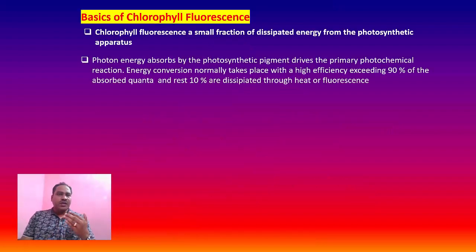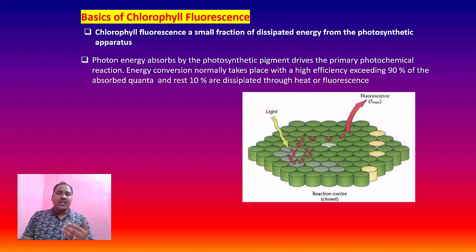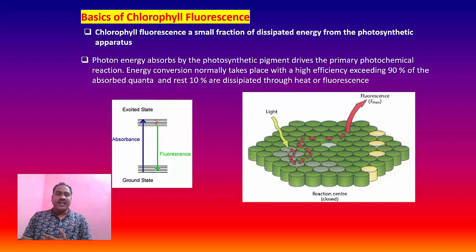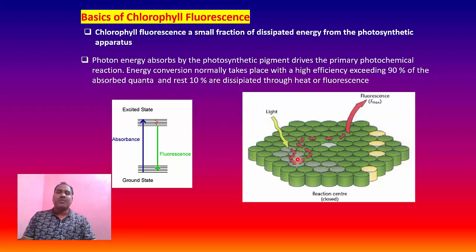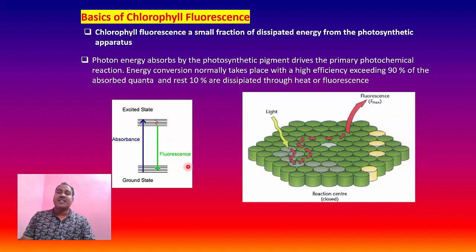Chlorophyll fluorescence is a small fraction of dissipated energy from the photosynthetic apparatus. When light energy falls on the chlorophyll molecules, the electrons of the chlorophyll molecules are excited and jump from the lower energy orbit or ground state to the excited state. When these excited electrons return to the ground state, they emit fluorescence.